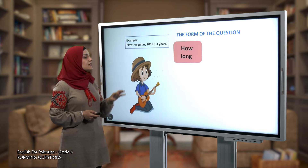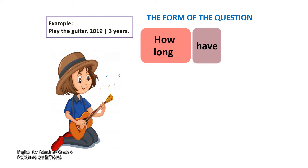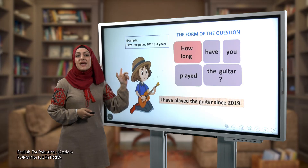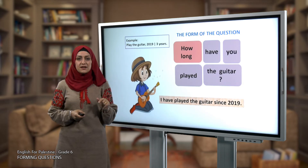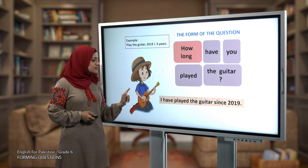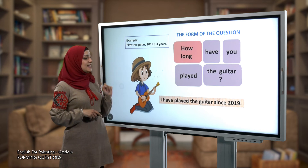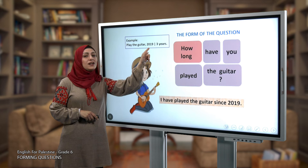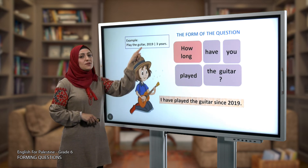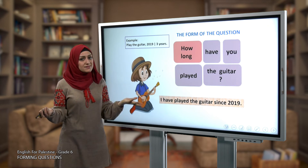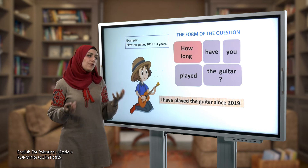Now let's practice. We have an example: the boy is playing the guitar. He started playing the guitar in 2019. We ask: 'How long have you played the guitar?' He answers: 'I have played the guitar since 2019.' He can also say: 'I have played the guitar for three years.' So with '2019' we use 'since,' and with 'three years' we use 'for.'